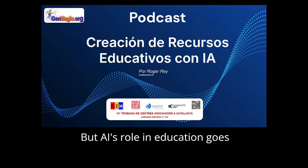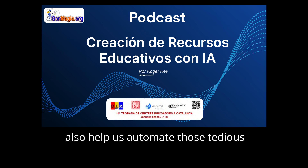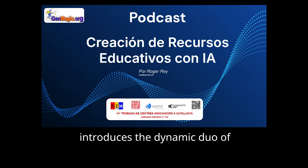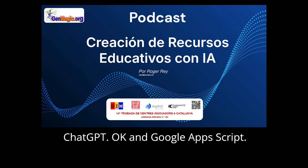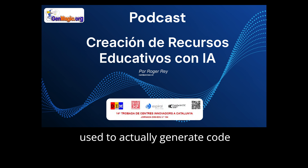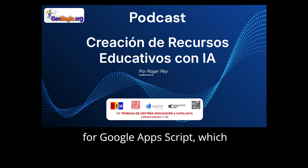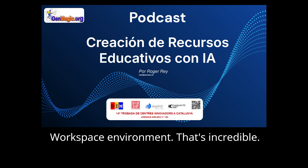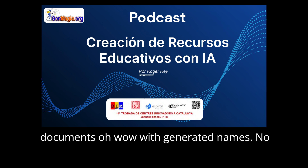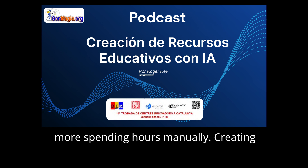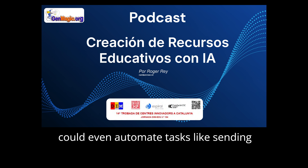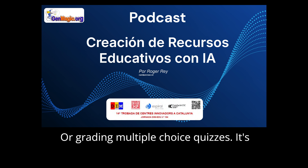AI's role in education goes beyond content creation — it can also help automate tedious administrative tasks. On slides eight and nine, Roger introduces the dynamic duo of ChatGPT and Google Apps Script. ChatGPT with its natural language processing capabilities can be used to generate code for Google Apps Script, which automates tasks within the Google Workspace environment. Roger walks us through an example of how to use these tools to automatically create folders and documents with generated names — no more spending hours manually creating and labeling digital files. You could even automate tasks like sending personalized feedback to students or grading multiple choice quizzes.